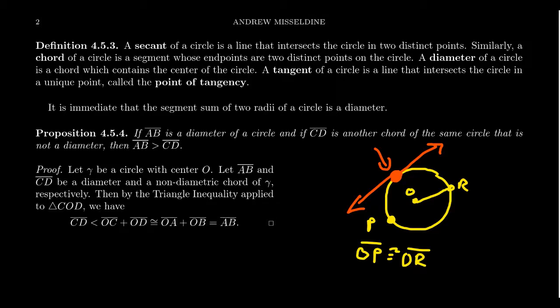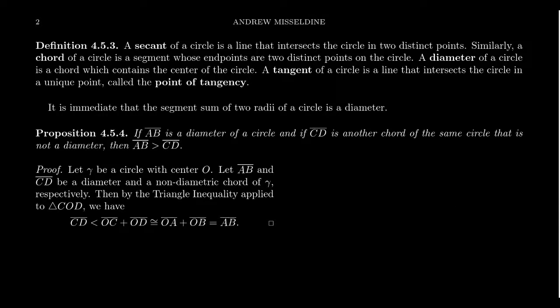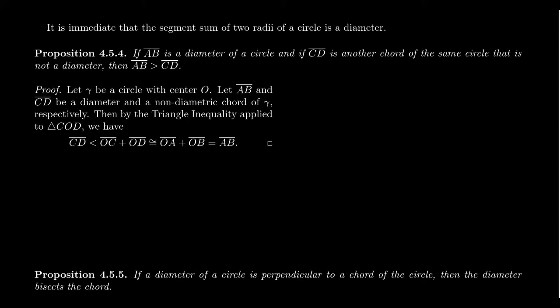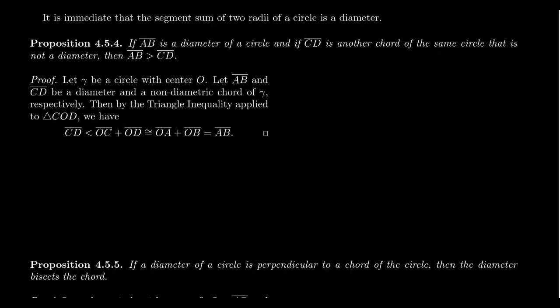With the notions of secant, chord, diameter, and tangent established, we're ready to prove some important propositions. The first: if segment AB is a diameter of a circle and CD is any other chord of that same circle but is not a diameter, then segment AB is greater than segment CD. This is what it means for diameters to be maximal — more precisely, the maximum — chords.